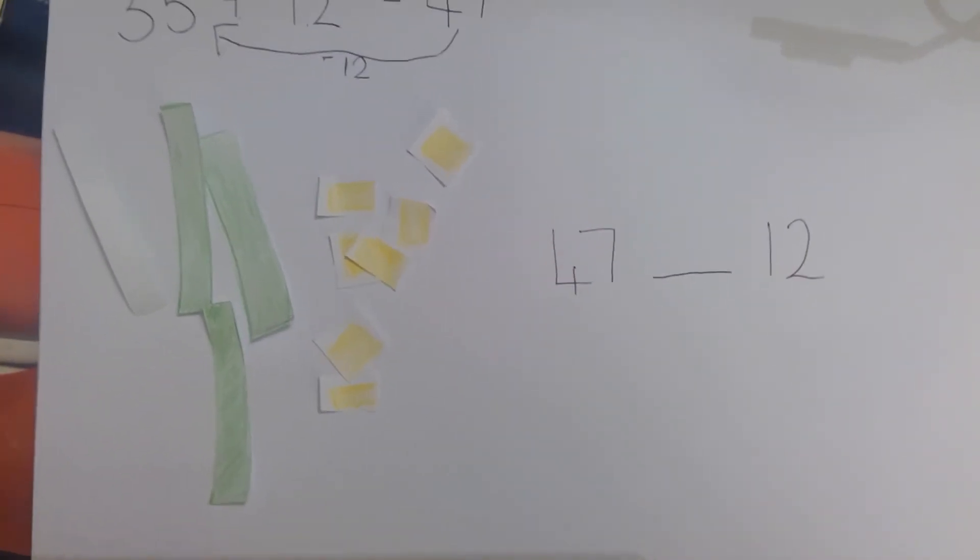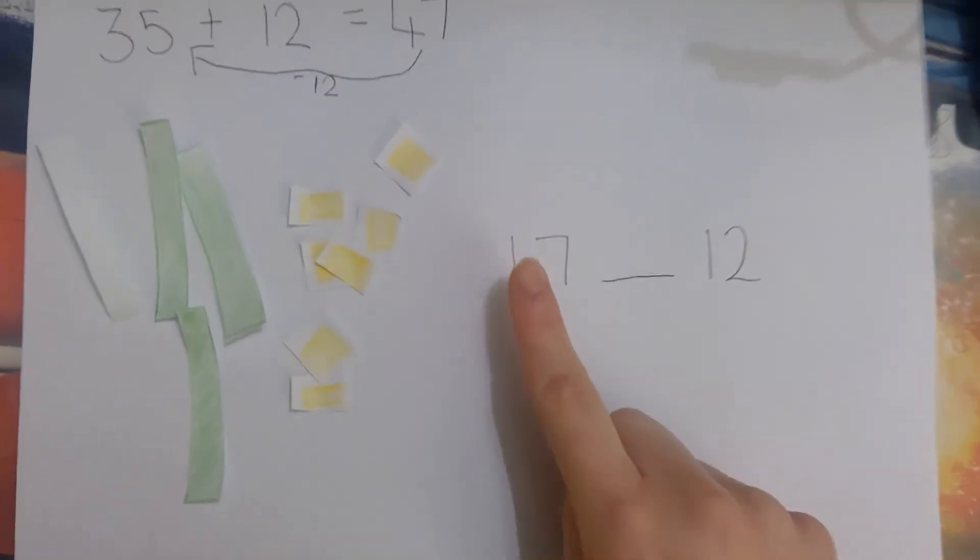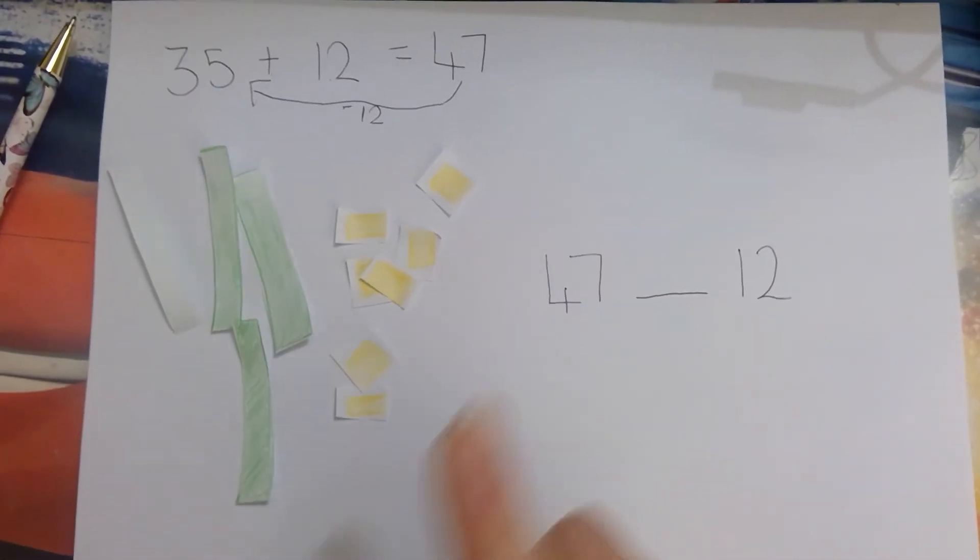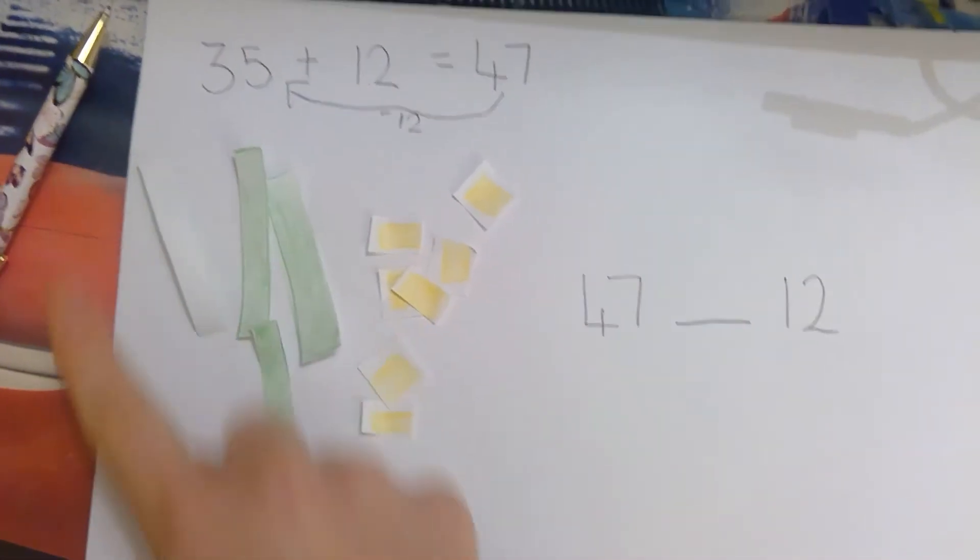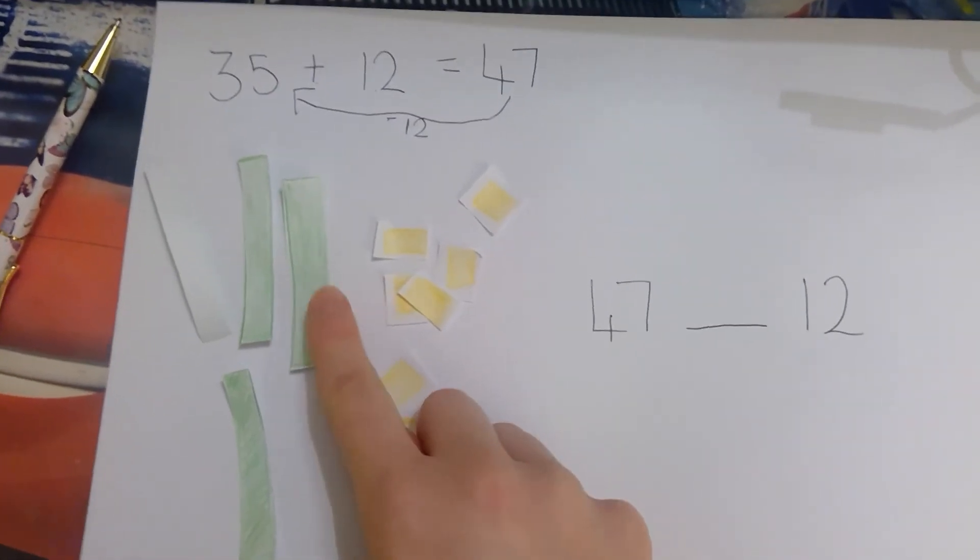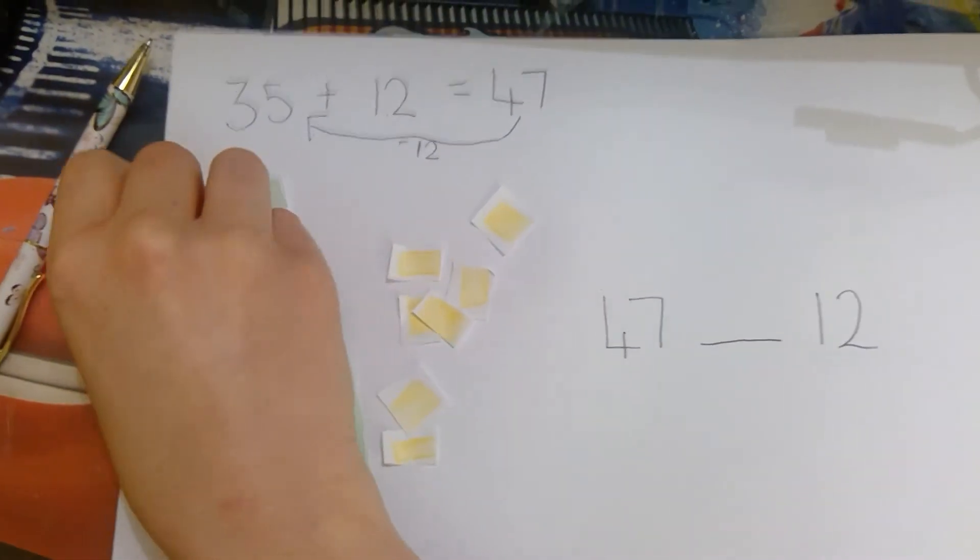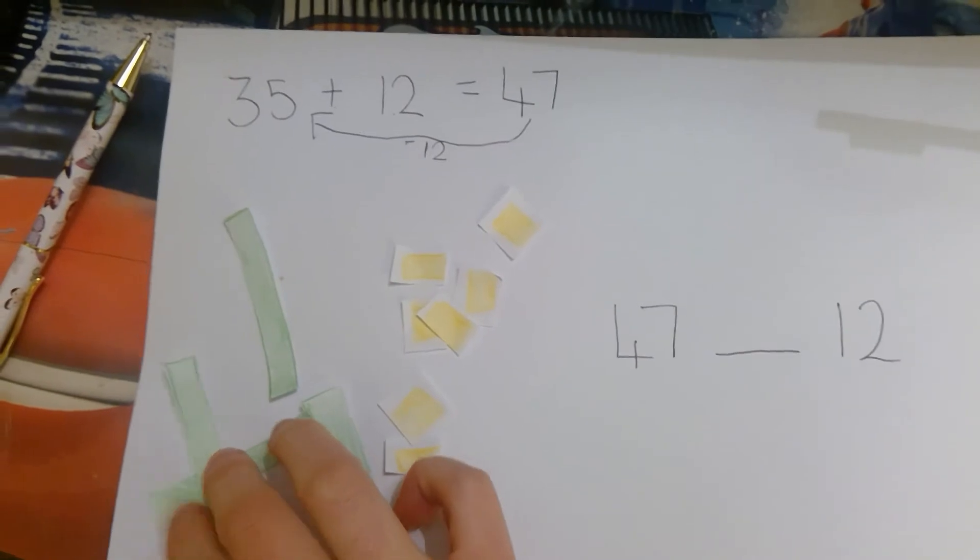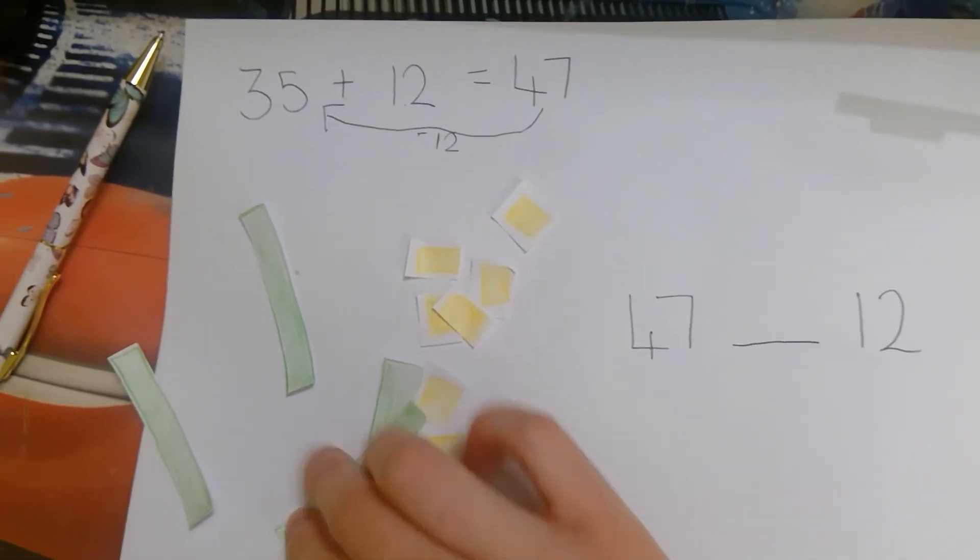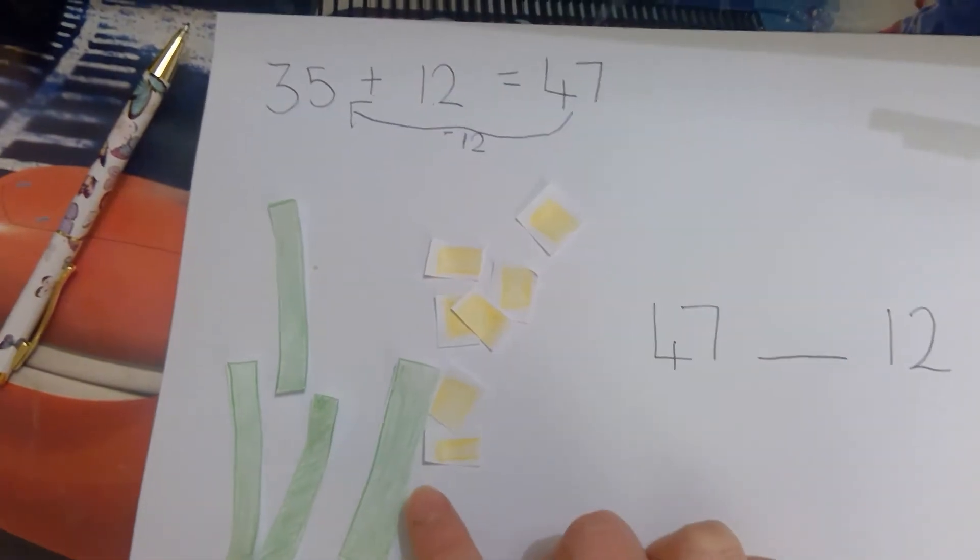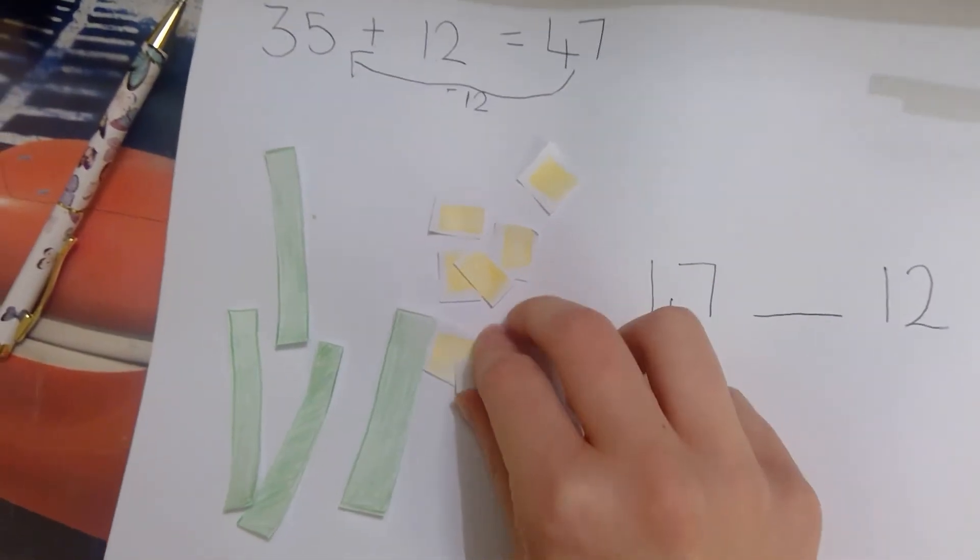Step 5. Solve the calculation. 47, take away 12. So I'm going to use the tens that I had earlier and get my 47 that I had made. 47, 4 tens, 40 and 7 ones.